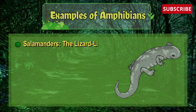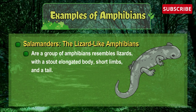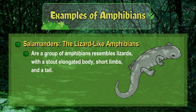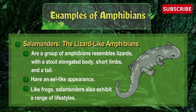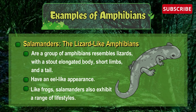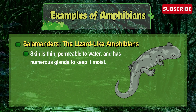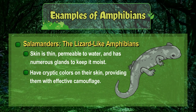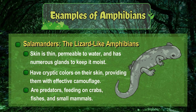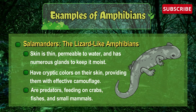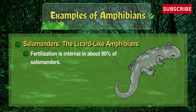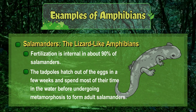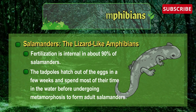Salamanders are lizard-like amphibians with a stout, elongated body, short limbs, and a tail — some even have an eel-like appearance. Their skin is thin, permeable to water, and has numerous glands to keep it moist. Salamanders have cryptic colors on their skin providing effective camouflage. Most salamanders are predators, feeding on crabs, fish, and small mammals. Fertilization is internal in about 90% of salamanders. The tadpoles hatch out of eggs in a few weeks and spend most of their time in water before undergoing metamorphosis into adult salamanders.